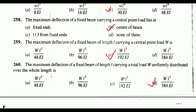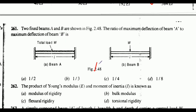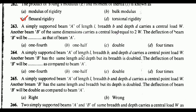Two fixed beams A and B as shown in figure — the ratio of maximum deflection of beam A to maximum deflection of beam B. Options are 1/2, 1/3, 1/4, 1/8. The correct answer is option A: 1/2 (half). Next, the product of Young's modulus E and moment of inertia I is known as: modulus of rigidity, bulk modulus, flexural rigidity, or torsional rigidity. The correct answer is option C: flexural rigidity.